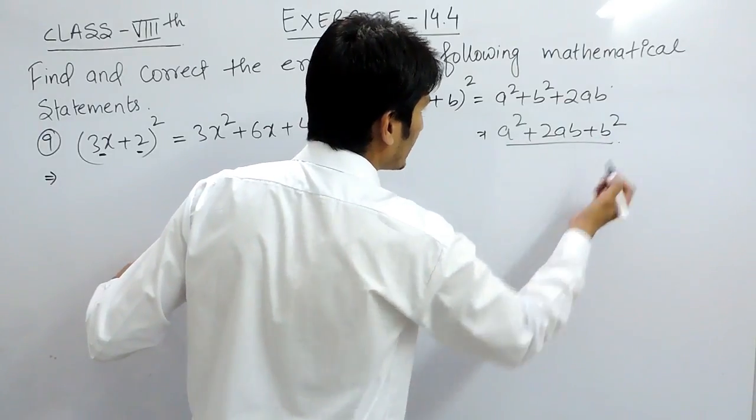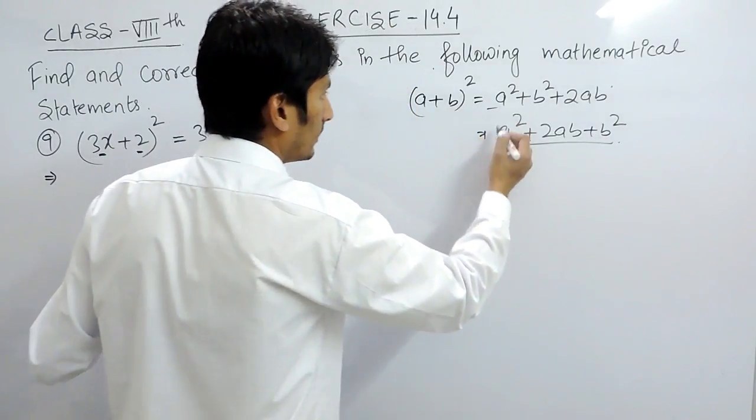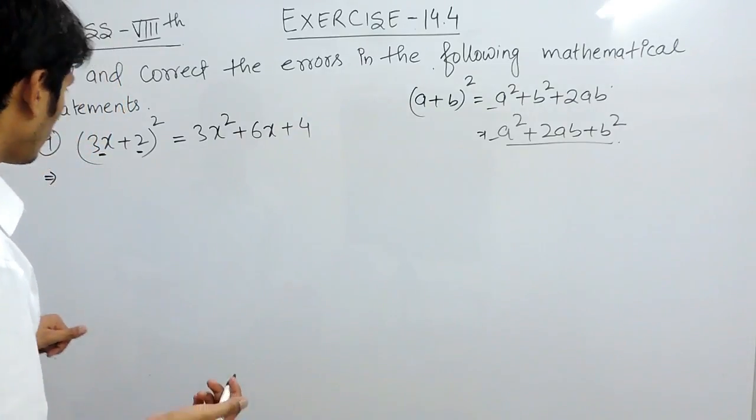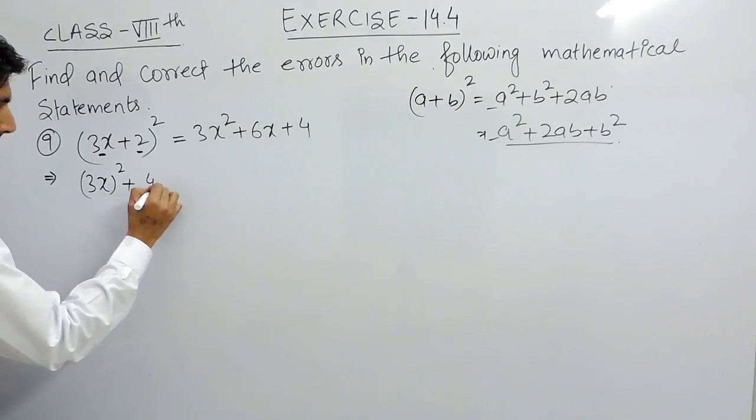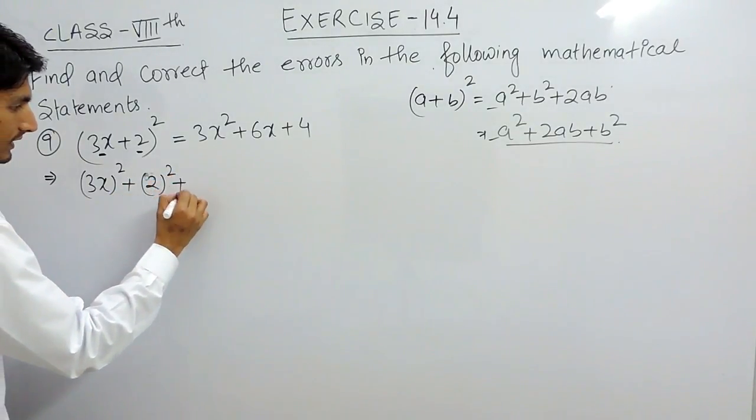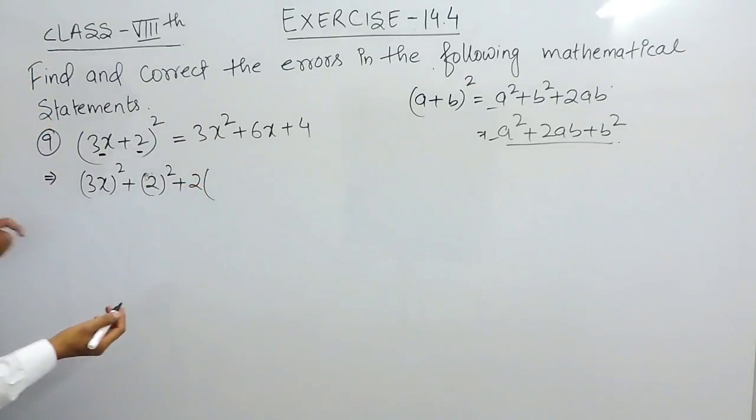So if this is (a+b) whole square and I want to expand it, I'll expand it as a² plus b² plus 2 into a which is 3x, into b which is 2.